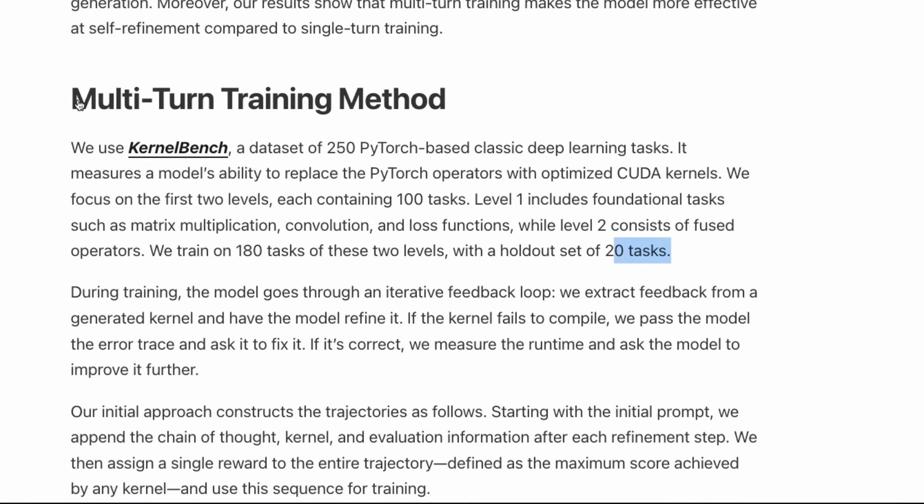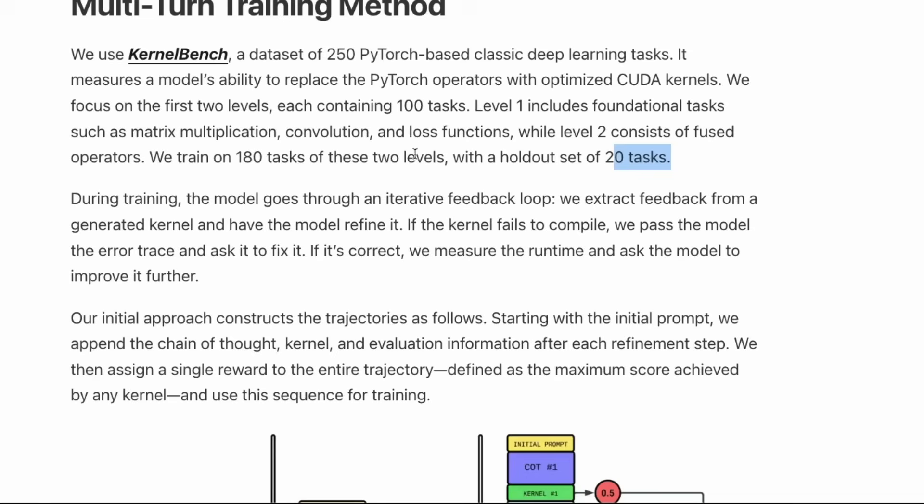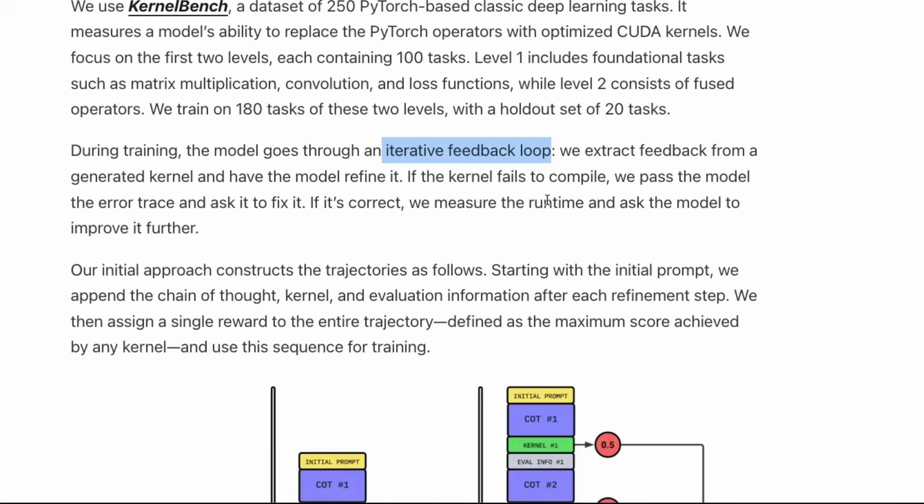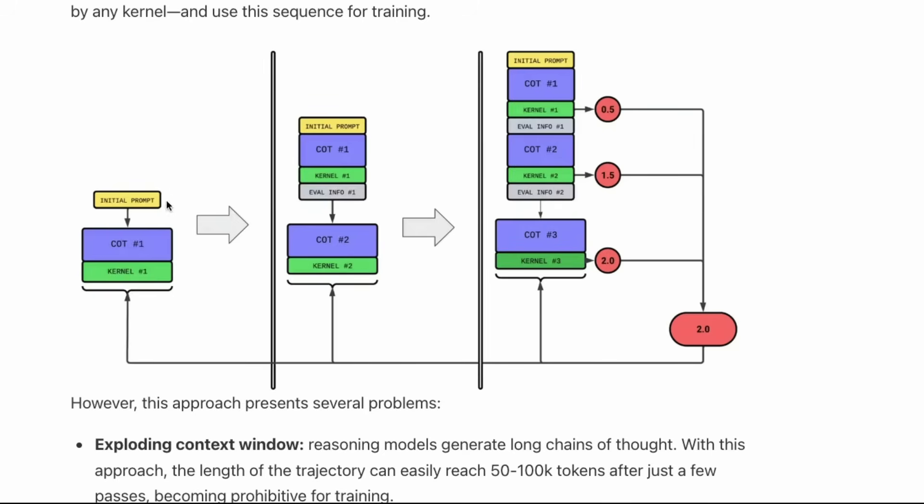Leaving that confusion aside, this is a very good model that does certain things really well. One is what they call multi-turn training method. They've taken the model through an iterative feedback loop, and this iterative feedback loop is what makes somebody a good programmer. You don't just go from point A to solution B; rather, you go from A to A1 to A2 to A3, A4, A5, and then finally arrive at the final solution. They start with the initial prompt that has the chain of thought that generates the kernel, then evaluate it, and that evaluation information goes back for retraining.